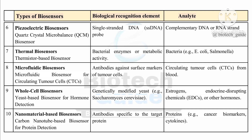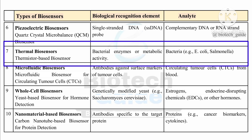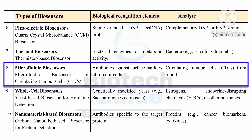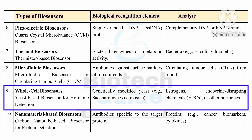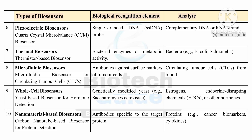Let us discuss five more types. Piezoelectric biosensor: an example is quartz crystal microbalance biosensor, where single-stranded DNA is the recognition element and complementary DNA or RNA is the analyte. Thermal biosensor: bacterial enzymes or metabolic activity is the recognition element, and bacteria is the analyte. In microfluidic biosensor: antibodies against surface markers of tumor cells act as the recognition element, and circulating tumor cells from blood is the analyte. Whole-cell biosensor: genetically modified yeast Saccharomyces cerevisiae is the recognition element, and estrogen, endocrine disrupting chemicals (EDCs), or other hormones act as the analyte. Nanomaterial biosensor: antibodies specific to the target protein act as the recognition element, and proteins such as cancer biomarkers and cytokines are the analyte.